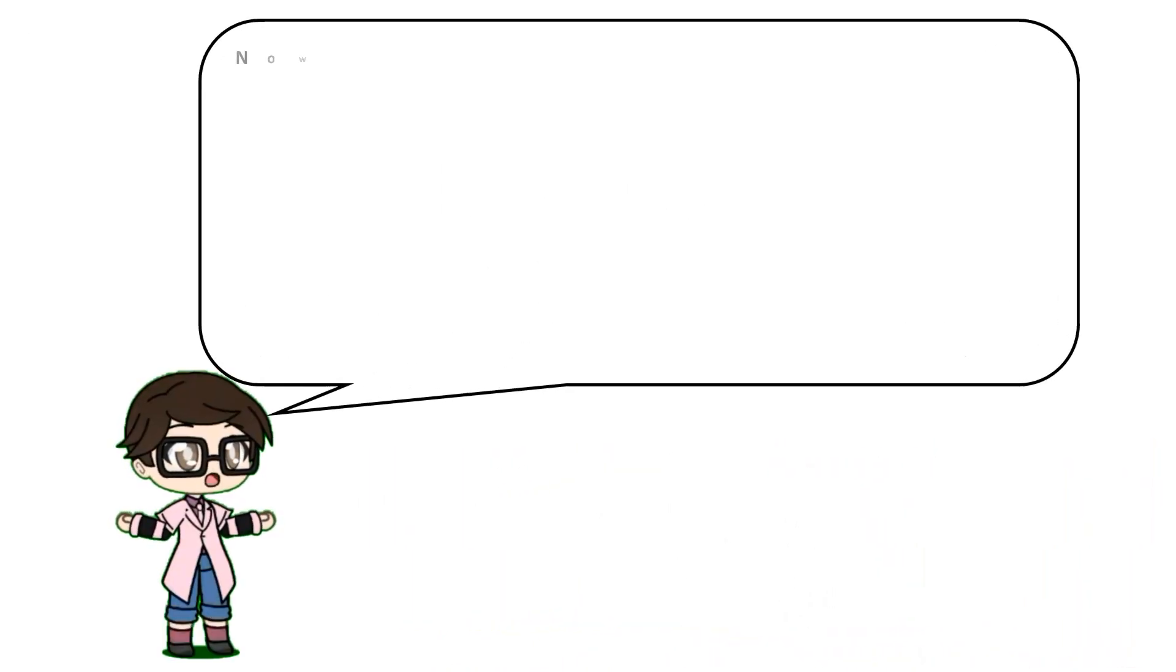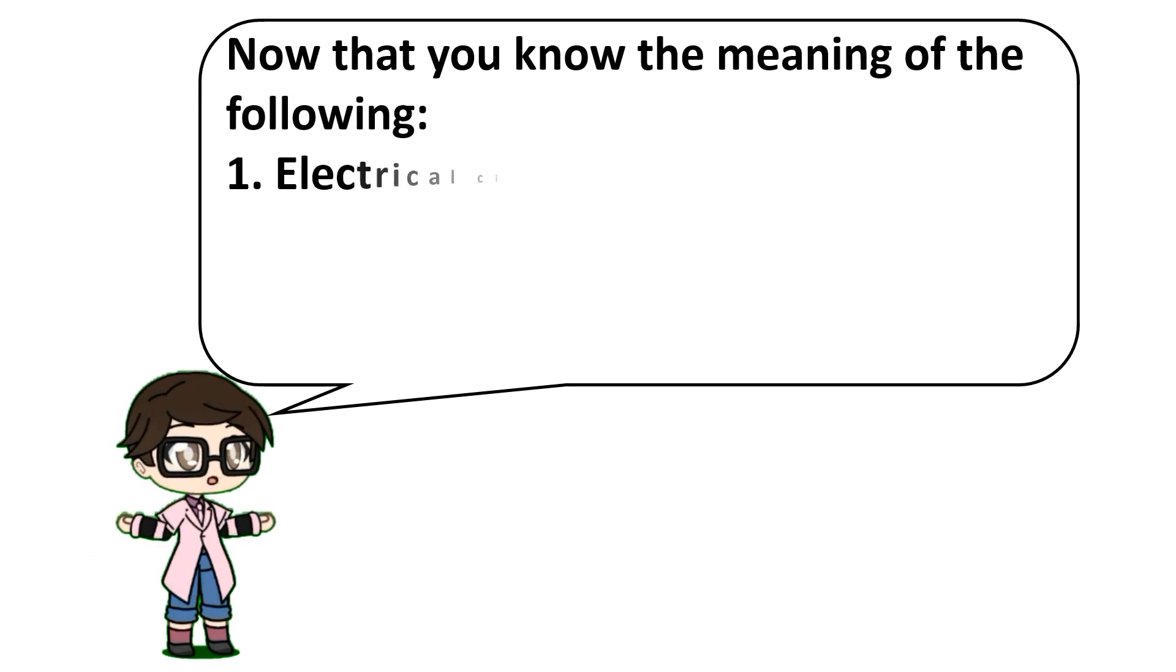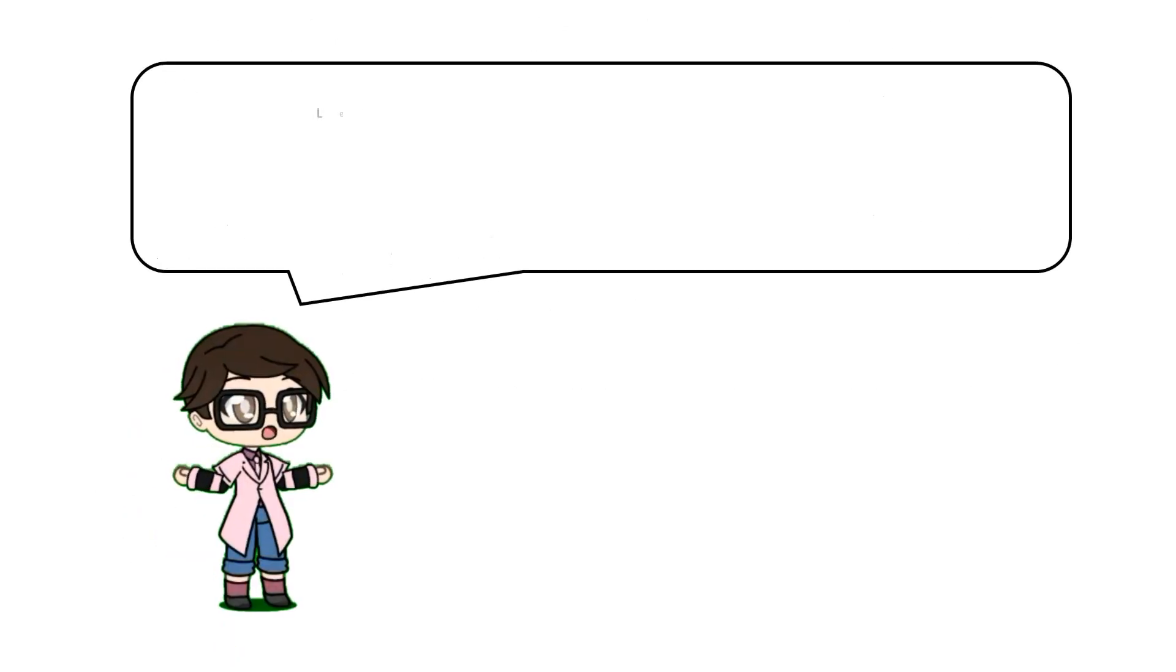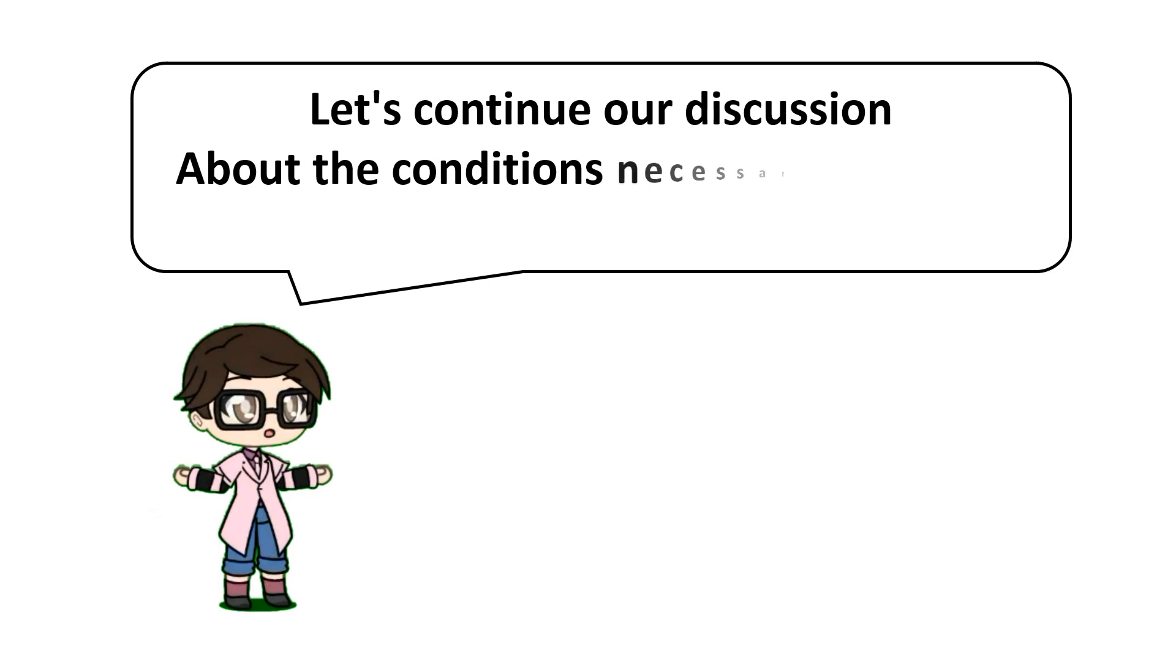Now that you know the meaning of the following terms, like electrical circuit, direct current, alternating current, and Ohm's law, we can now continue our discussion about the conditions necessary to make a bulb light up.